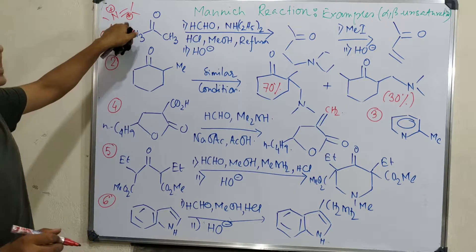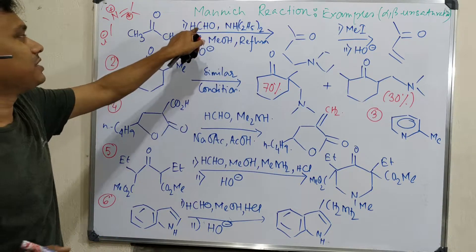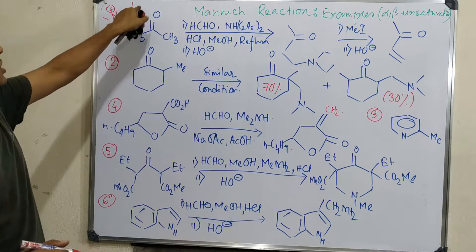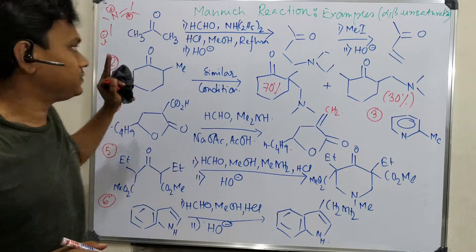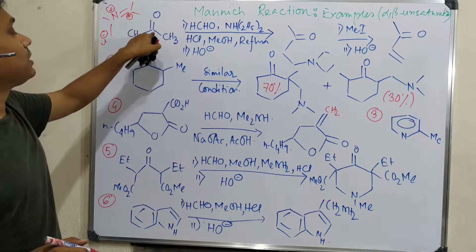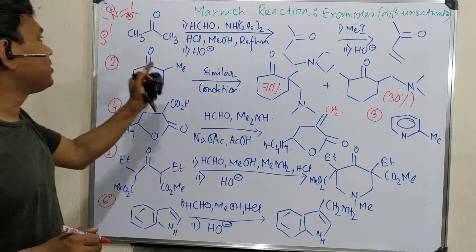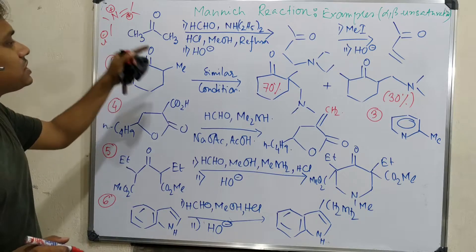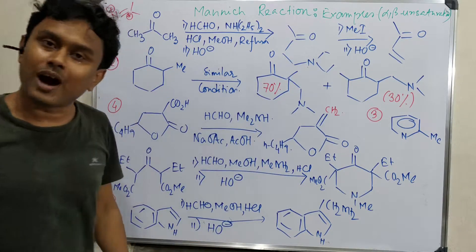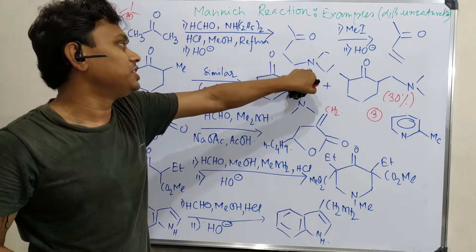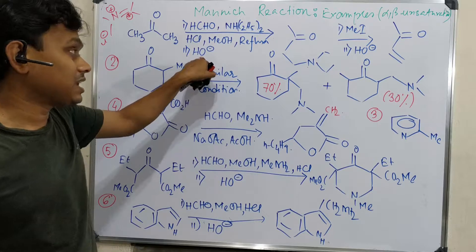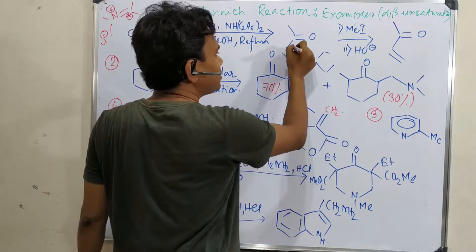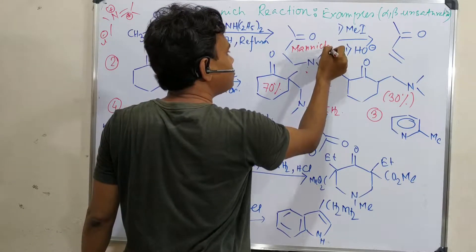Throughout this discussion, whatever is written in the reaction conditions — formaldehyde, this amine, HCl, methanol, reflux — the reaction involves the use of an iminium ion, making it more selective. Since HCl is used, the ketone undergoes iminium formation first, and that attacks this carbonyl group, producing the beta-amino carbonyl intermediate. Initially it is produced as an HCl salt, and after alkali treatment the amine is produced. This is called the Mannich base.